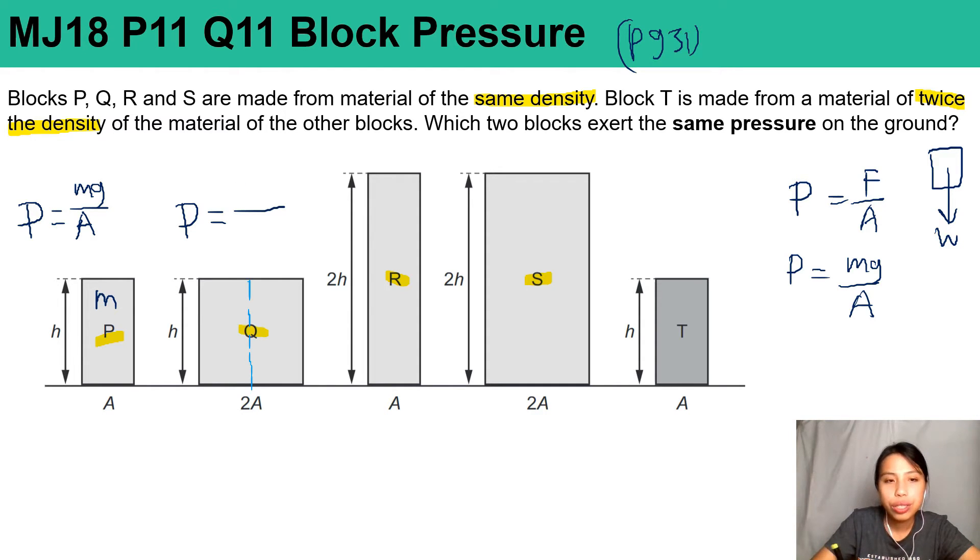And the cross-section area is 2A. Two and two cancel out. Hey, they have the same pressure: mg over A, mg over A. So that should be the answer.